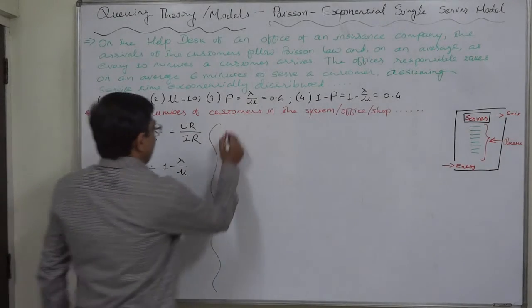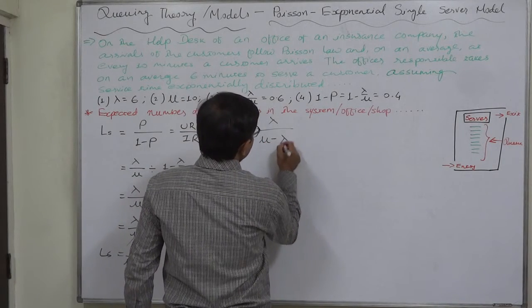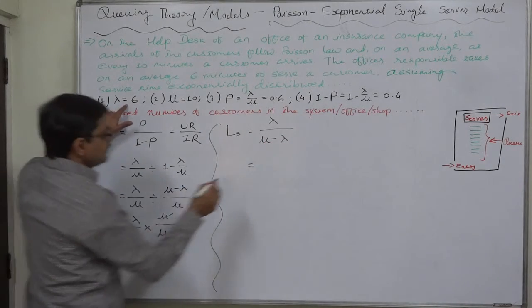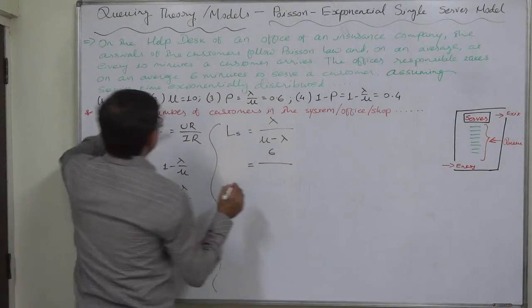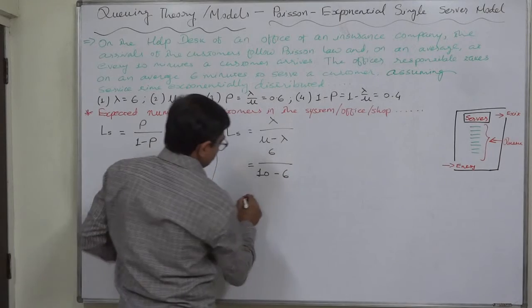And that is Ls equals to lambda upon mu minus lambda. Lambda is 6, mu is 10 minus lambda is 6, so it comes to 6 by 4.